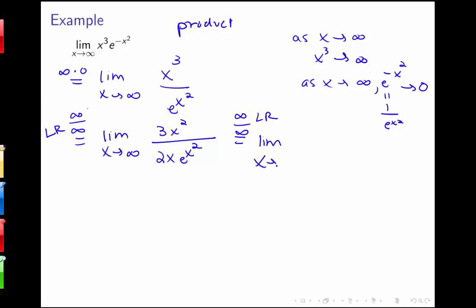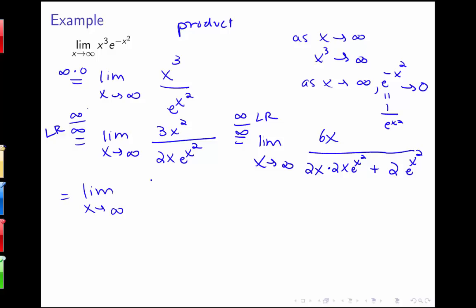I now have the limit as x goes to infinity of 6x over a denominator that requires the product rule: 2x times the derivative of e to the x squared (which is 2x·e^(x²)), plus e to the x squared times 2. Simplifying, the denominator becomes 4x squared·e to the x squared plus 2·e to the x squared. This is still of the form infinity over infinity — two large terms added together — so infinity plus infinity is just infinity, and I apply L'Hôpital's rule again.